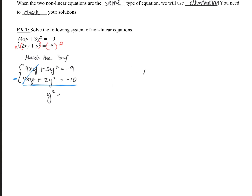So we're left with y squared equals 1. We have a squared term, so we go ahead and take the square root of both sides — plus or minus. We get y equals plus or minus the square root of 1, which is just 1. So y equals 1 and y equals negative 1, which means we're going to get two possible answers for x.